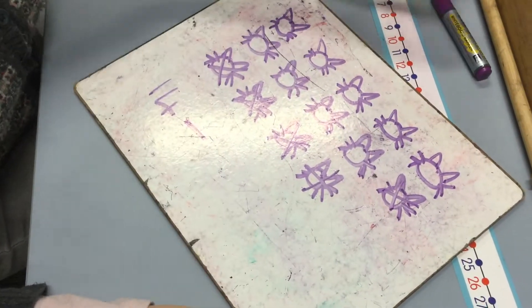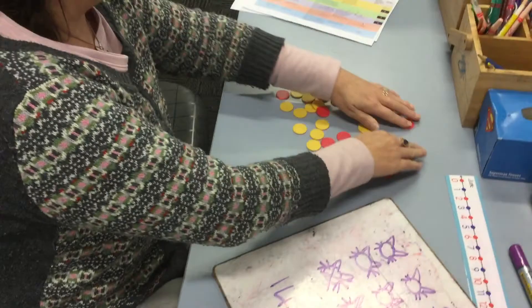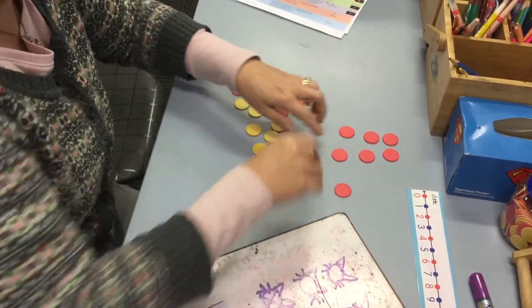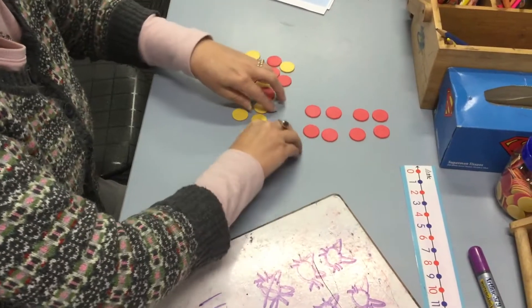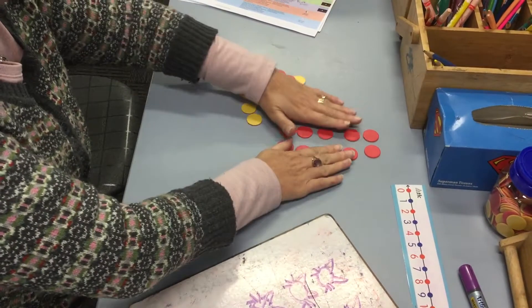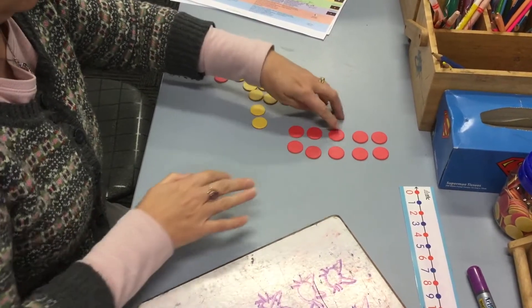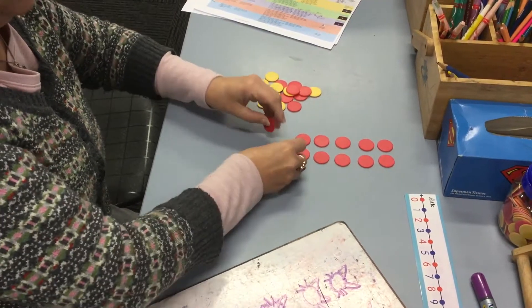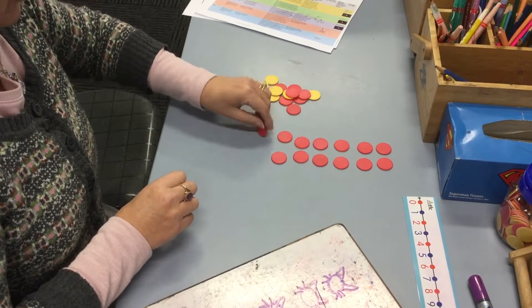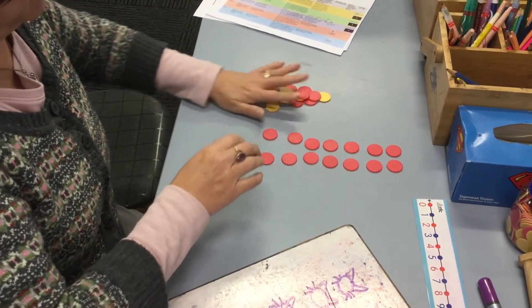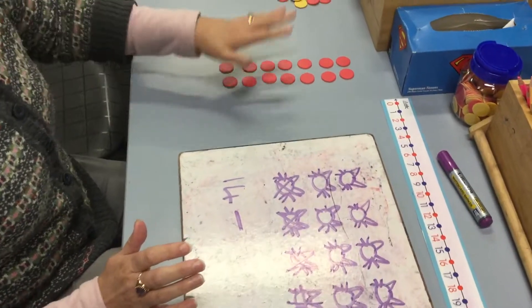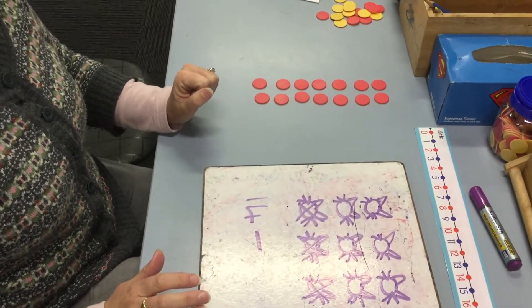Now we can also use our counters to help us at this stage too, because we can get 14 doing the same thing that we've done with our drawing there. We can make sure, so I know I've got five—one, two, three, four, five—and then another five, that's ten, eleven, twelve, thirteen, fourteen. So I've got 14 there, so I can do the same. We did this last week a bit, but now we're using bigger numbers, we might need to do it again.